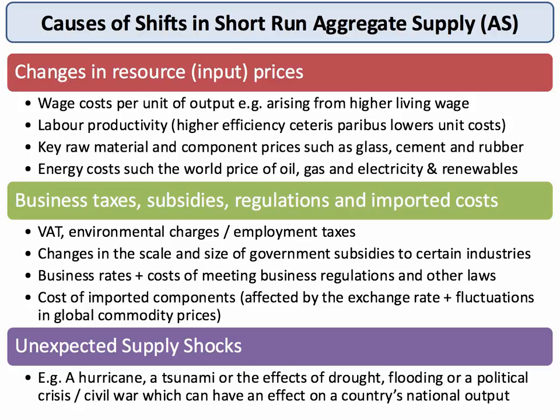Aggregate supply in the short run can shift when there's a change in the costs of supply. These can be caused by changing the price of key inputs or by government intervention. A key factor is a change in resource cost or input cost — for example, wages per unit of output, perhaps due to an increase in the minimum wage, or a change in labor productivity, which affects unit wage costs.